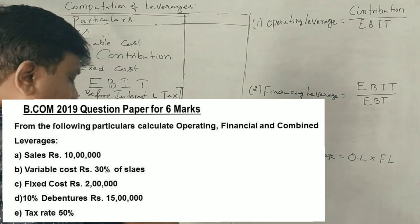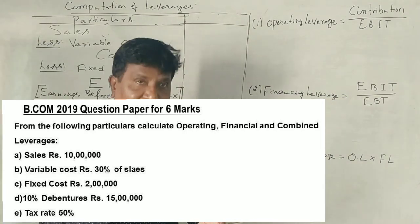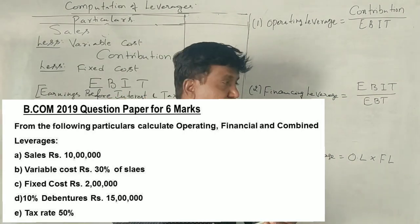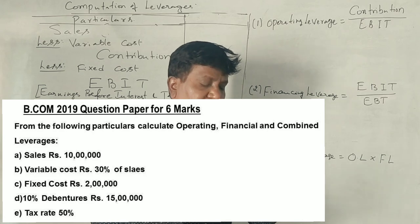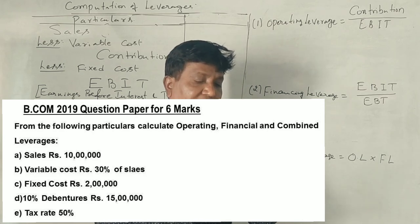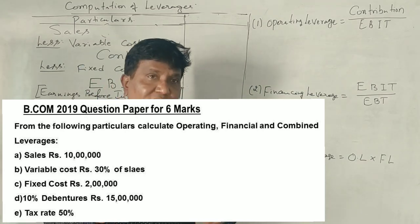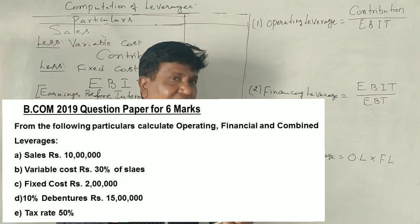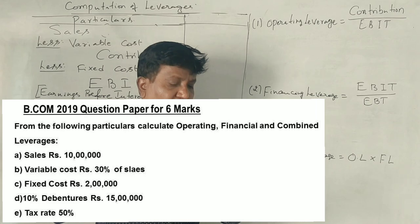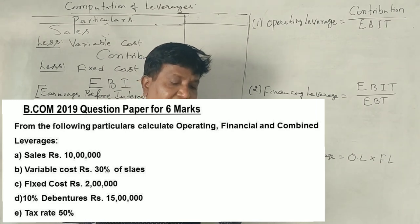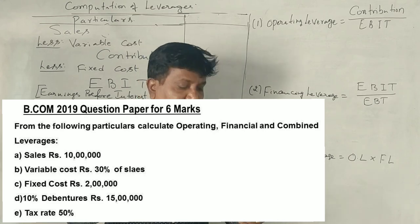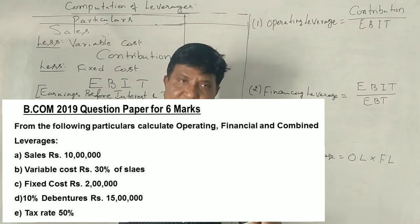Students, this is a VECOM 2019 question paper for calculating leverages, worth 6 marks. From the following information, calculate operating, financial, and combined leverages. What is given: sales 10 lakhs, variable cost 30% on sales, fixed cost 2 lakhs, 10% debentures capital is 15 lakhs, and tax rate is 50%. We are asked to calculate all types of leverages.